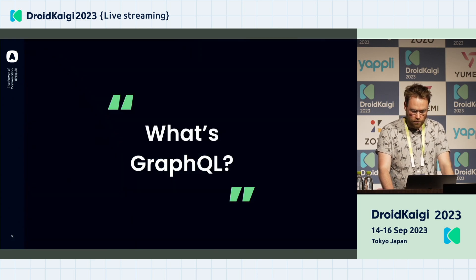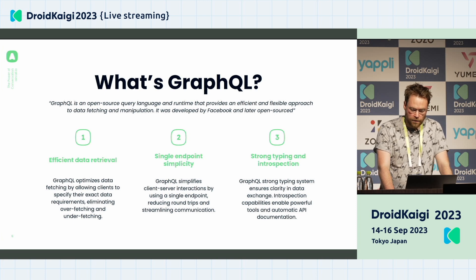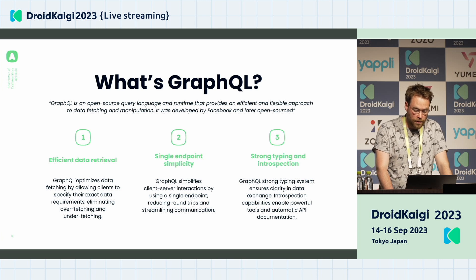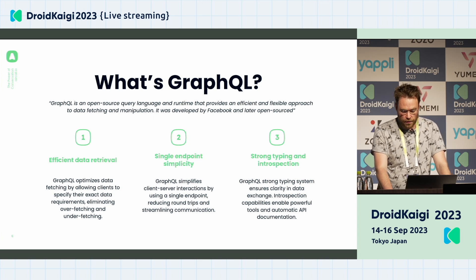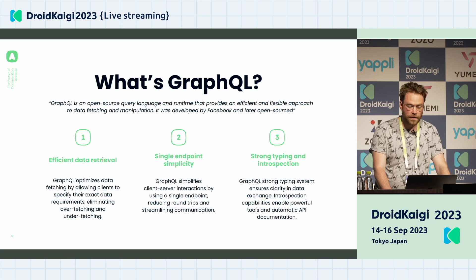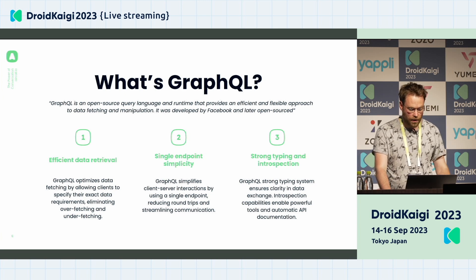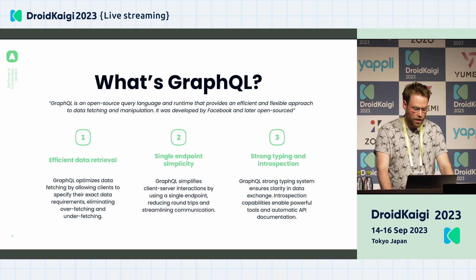So what's GraphQL? GraphQL is an open source query language and a runtime that provides an efficient and flexible approach to data fetching and manipulation. It was developed by Facebook and later open sourced. Three main points here: first, efficient data retrieval — GraphQL optimizes data fetching by allowing clients to specify their exact data requirements, eliminating overfetching and underfetching.